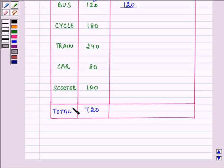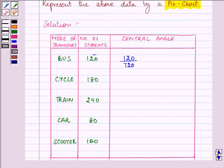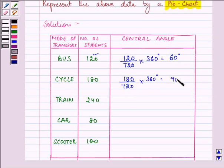720, that is their sum, and it will get multiplied by 360 and the answer comes out to be 60 degrees. In the same manner we will be finding out for the rest of them also: 180 divided by 720 into 360 degree, giving us 90 degrees as the answer, and so on.